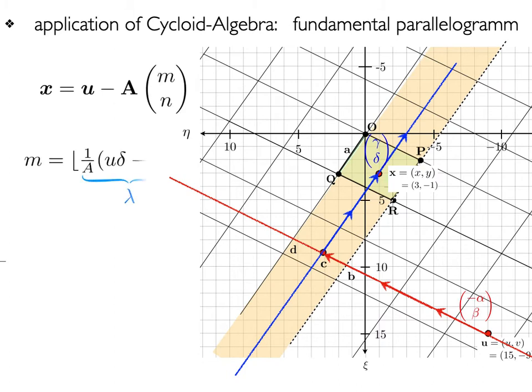The result is that x is vector u minus matrix A times vector m, n, where m and n are the floors of the solutions lambda and mu.